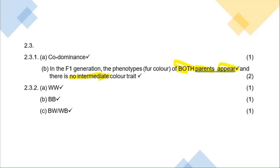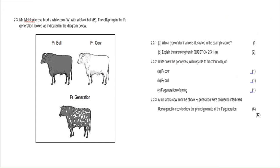There is no intermediate in this example — an intermediate would indicate incomplete dominance. Now looking at 2.3.2, you have to write down the genotypes with regards to fur color. When you see the word 'genotype,' think genes and think letters. You don't think black or white — that's the phenotype. When you see 'genotype,' the letters are what you need, and you always give two letters.